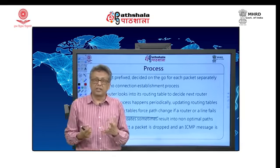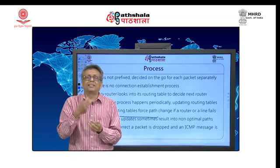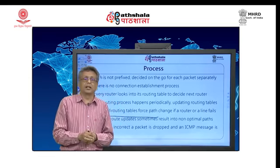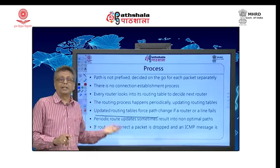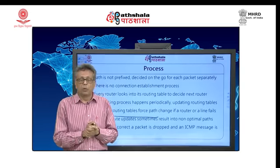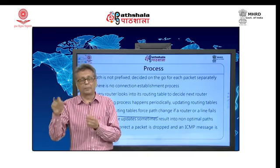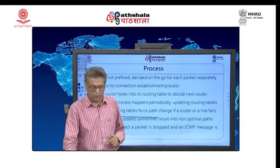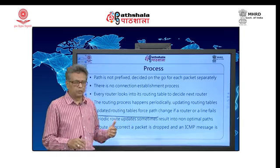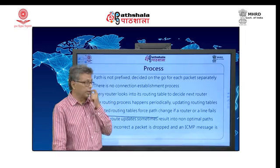Sometimes a change is not yet reflected in the routing table and a packet is incorrectly routed. When that happens, there is a mechanism called Internet Control Message Protocol (ICMP). When it is found that something is wrong, the packet is dropped and the sender is informed. You will find both reference books talking about that in more detail.